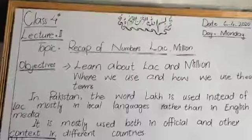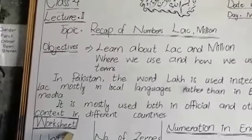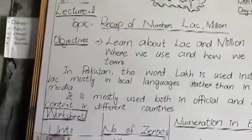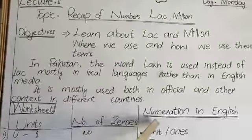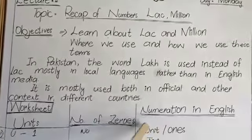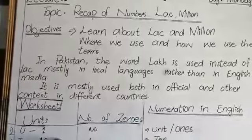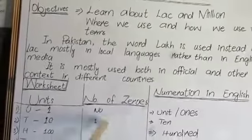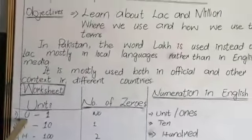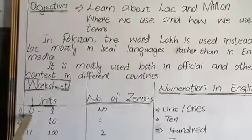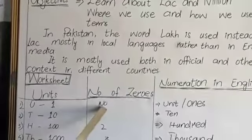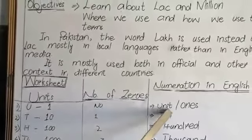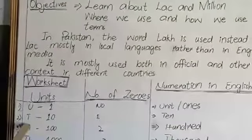Now we will use a word sheet to understand these concepts. In our word sheet, the first column is 'units,' the second column is 'number of zeros,' and the next one is 'numeration in English.' We will learn how many digits each unit has and what they are called. The first unit is denoted by U — it is a single digit and has no zeros.